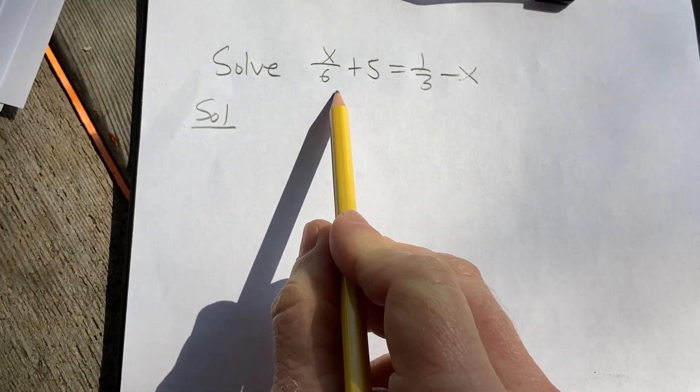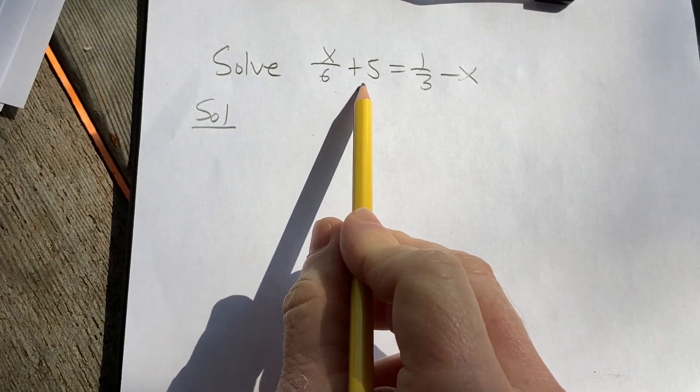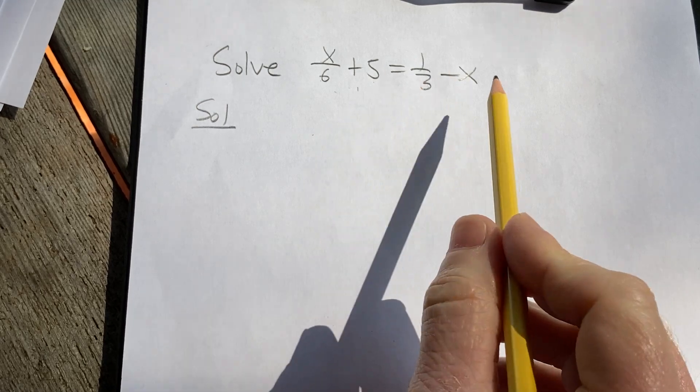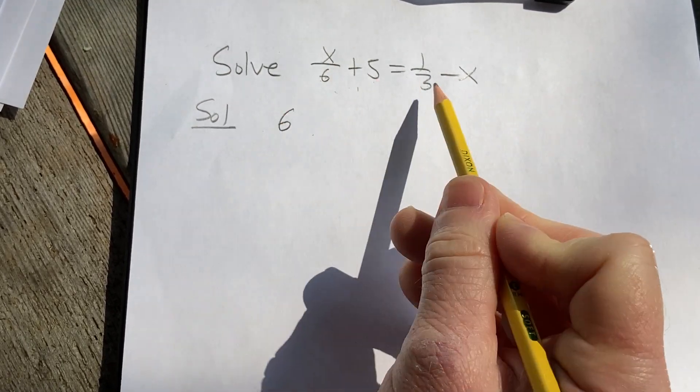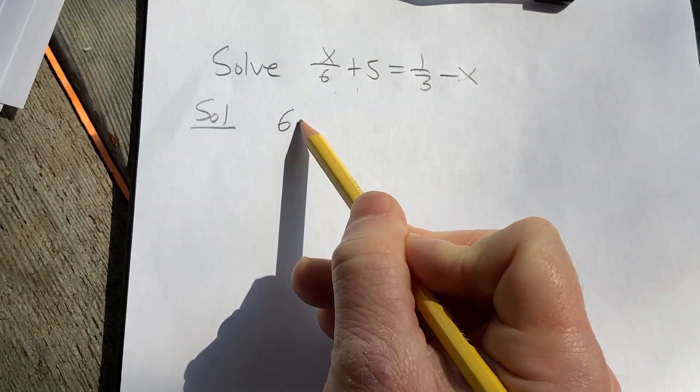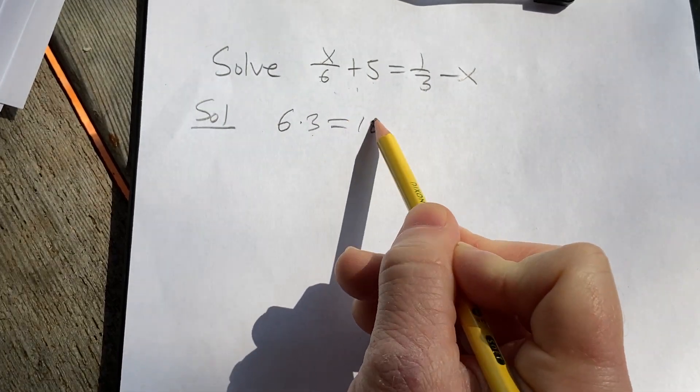The best way to solve equations with fractions like this is to eliminate the fractions. So one easy way to do it is like this. To get rid of the 6, you multiply by 6. To get rid of the 3, you multiply by 3. So you can multiply by 18, and that will get rid of both.